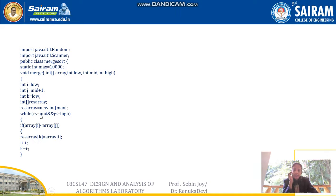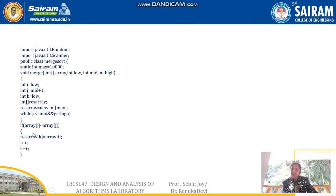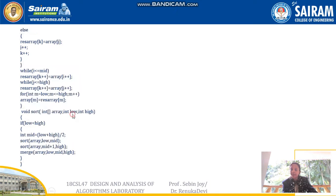Now, while i is less than or equal to mid and j is less than or equal to high, we are checking the values of array[i] and array[j]. If array[i] is lesser, we put array[i] into the result array and increment both i and k. Here, k is the index value for the result array.